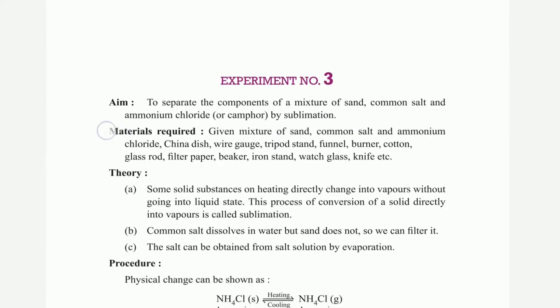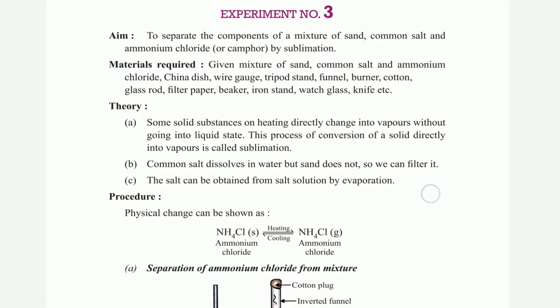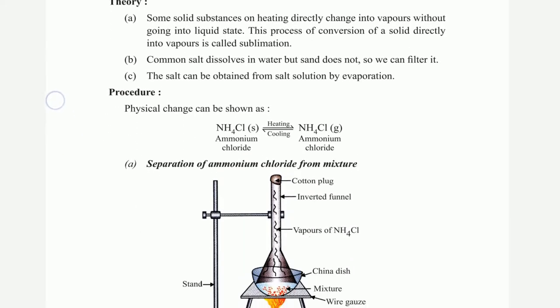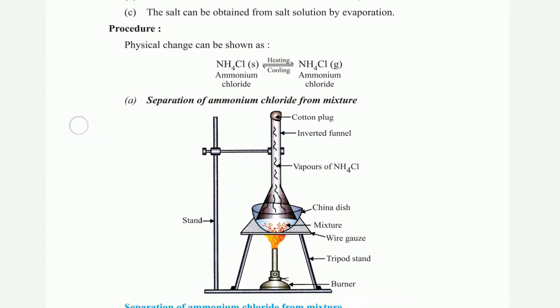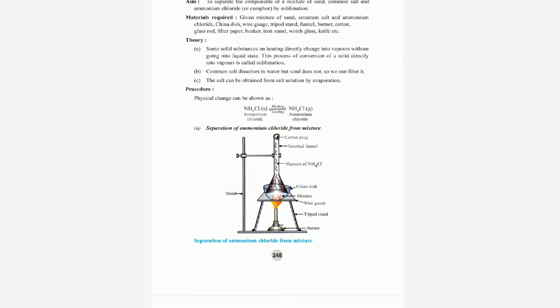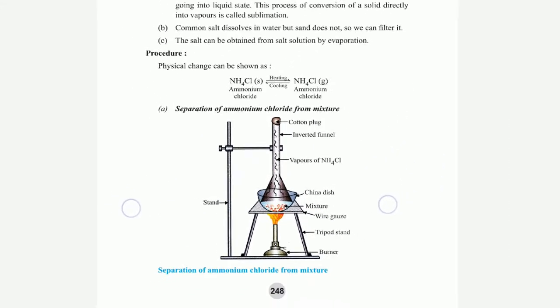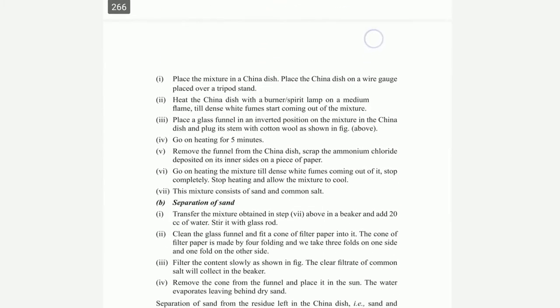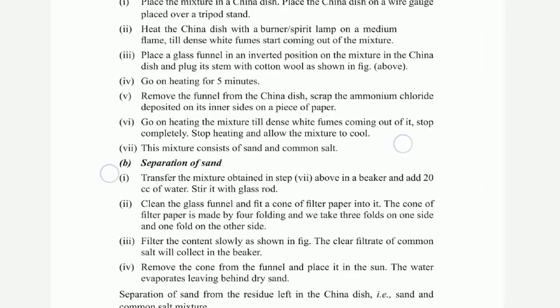Then experiment number 3: aim is to prepare the components of the mixture — ammonium chloride by sublimation. Materials required are listed, followed by theory, procedure, and diagram for separation of ammonium chloride from mixture.